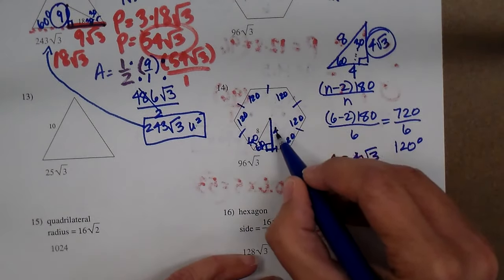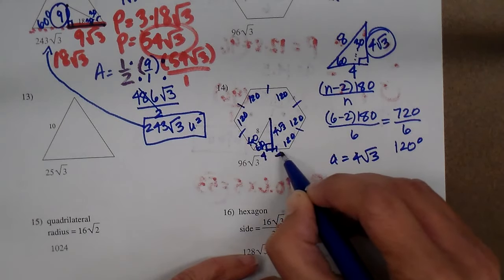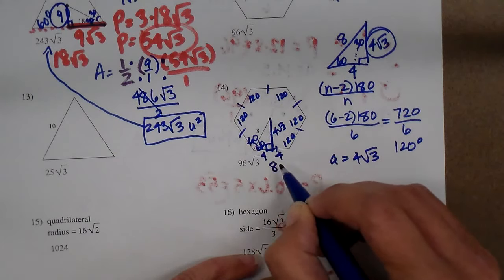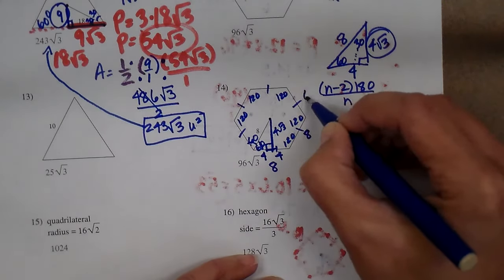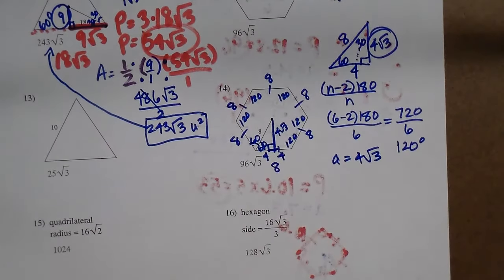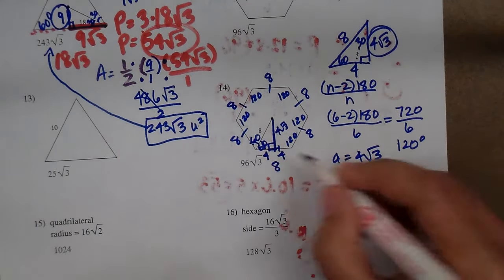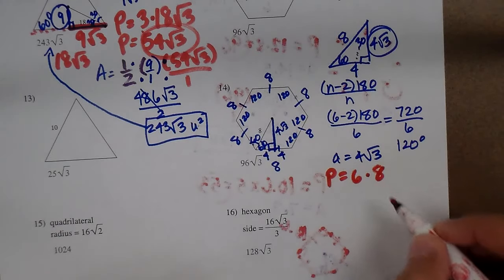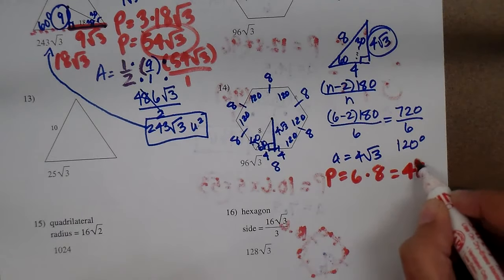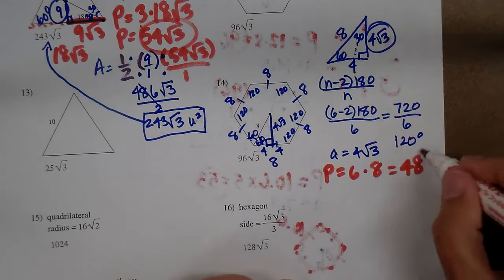If this side is 4 square root of 3 and that's 4, what would the whole side be if I've got 4 and 4? 8. So all of these are 8. The perimeter is going to be 6 sides at 8 apiece, which is 48.